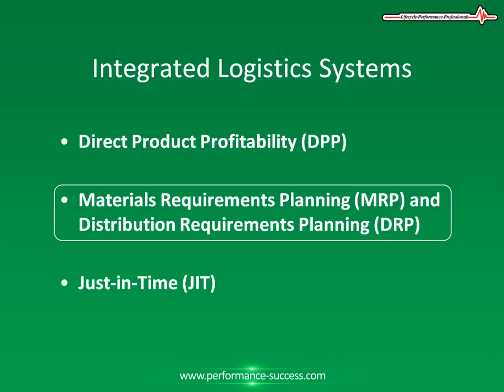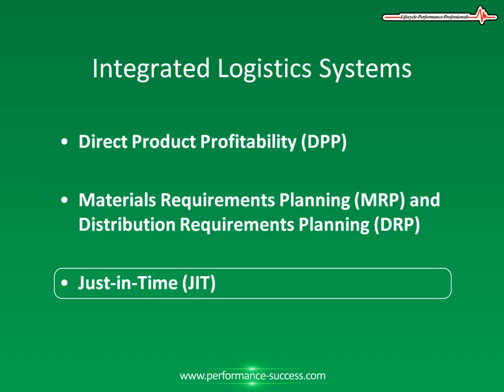Just in Time, or JIT, originated as a new approach to manufacturing and has been successfully applied in many industries such as the automotive industry. It has significant implications for distribution and logistics. The overall concept of JIT is to provide a production system that eliminates all activities that neither add value to the final product nor allow for the continuous flow of material — in simple terms, that eliminates the costly and wasteful elements within a production process. The objectives of JIT are vitally linked to distribution and logistics.